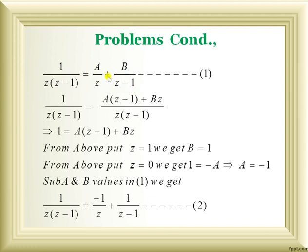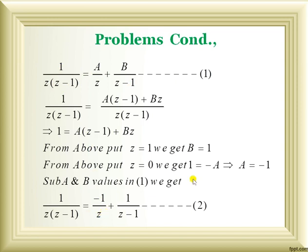Taking LCM on the right side gives 1 = A(z − 1) + Bz. Substituting z = 1 gives B = 1. Substituting z = 0 gives A = −1. Therefore: 1/[z(z−1)] = −1/z + 1/(z−1).